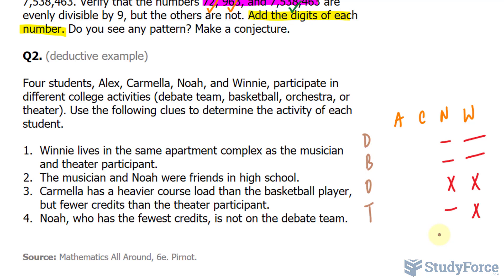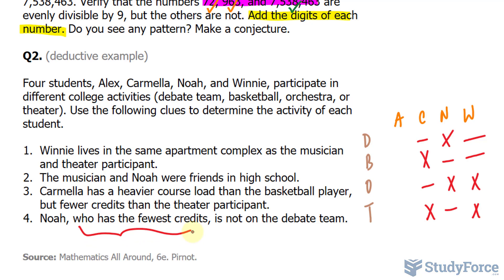In clue number 3, Carmela has a heavier course load than the basketball player, meaning she's not the basketball player, and fewer credits than the theater participant, so she's not in theater either. Finally, clue 4 states Noah, who has the fewest credits, is not on the debate team — so we cross out debate team for Noah. Combining clues 3 and 4, since Carmela is not in basketball or theater and Noah has the fewest credits, Noah is not in theater either. As a result, we've deduced that Noah is the basketball player.